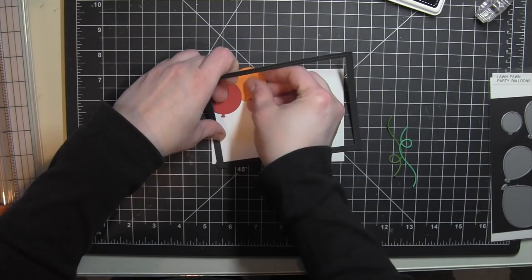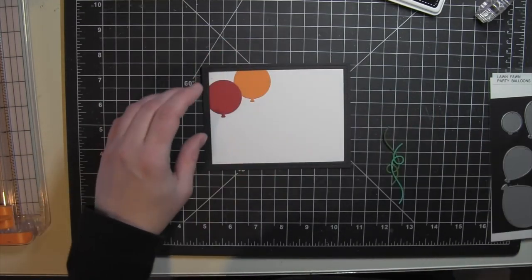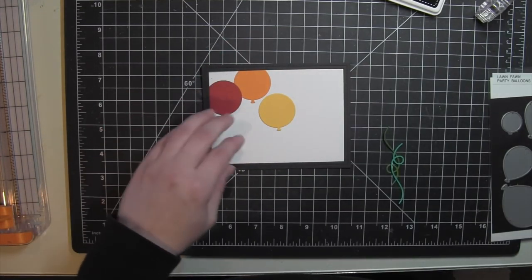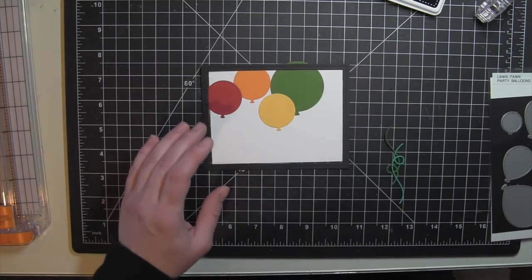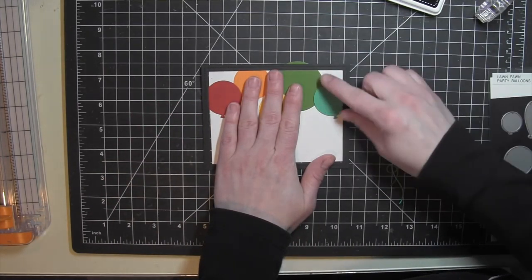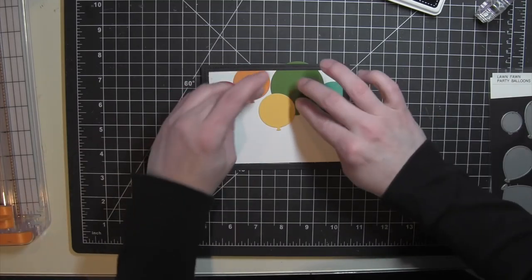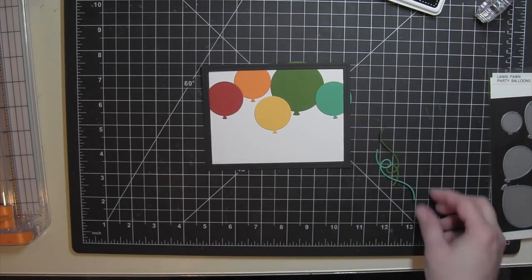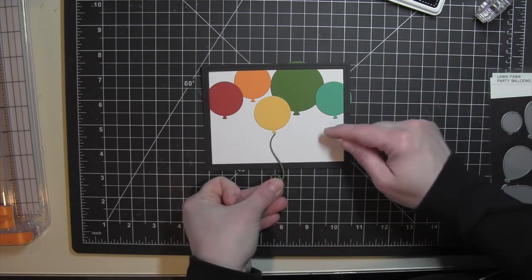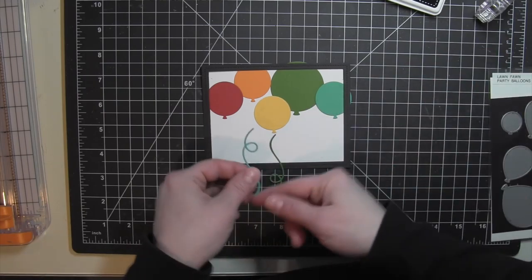Once my balloons are die cut, I'm going to fiddle with them a little bit and try to find the way that I want to lay them out on my white background. I only die cut one of the balloons in the large size, and then the rest are in that kind of medium round size.